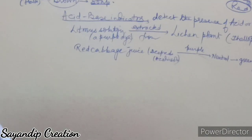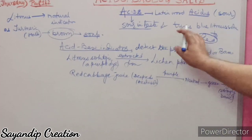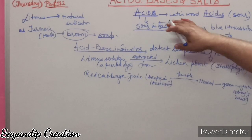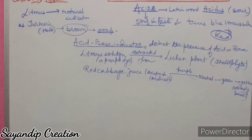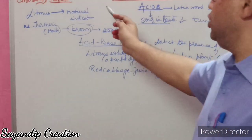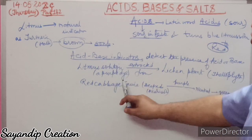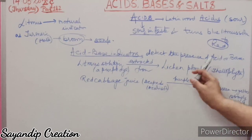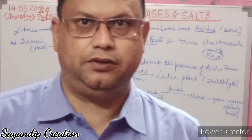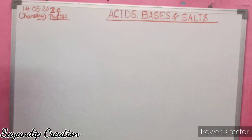Other natural indicators include blackberry, rose petals, and more. So to recap: acids are derived from the Latin word 'acidus,' they turn blue litmus to red, and litmus solution is a natural indicator — a purple dye extracted from the lichen plant of the Thallophyta family.